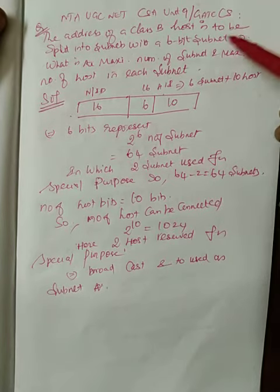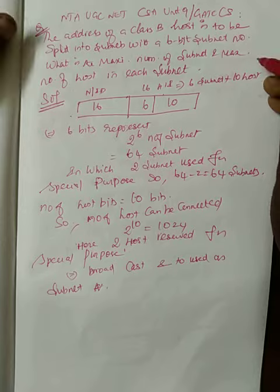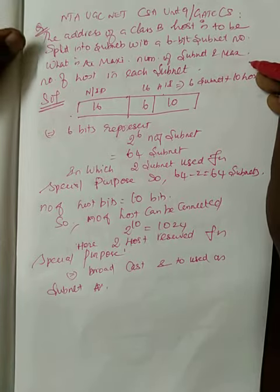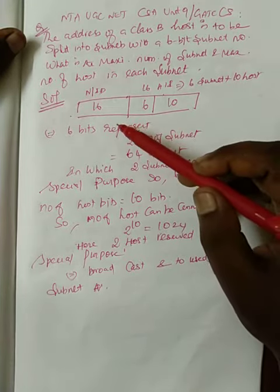I will read out the question. The address of a Class B host is to be split into subnets with a 6-bit subnet number. What is the maximum number of subnets and maximum number of hosts in each subnet? Again, this is Class B.